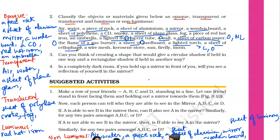A sheet of cellophane — we use cellophane paper to cover our books sometimes. It is translucent in nature and doesn't produce its own light, so it is non-luminous. A wire mesh — you cannot see clearly through it, but you can see through it, so you can consider it translucent and obviously non-luminous. Kerosene stove is again opaque.